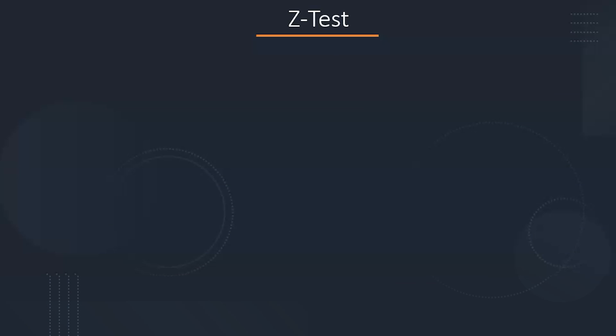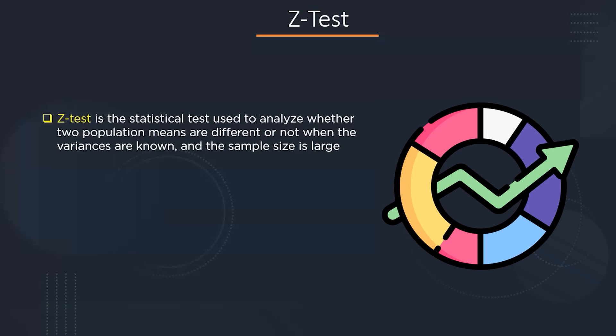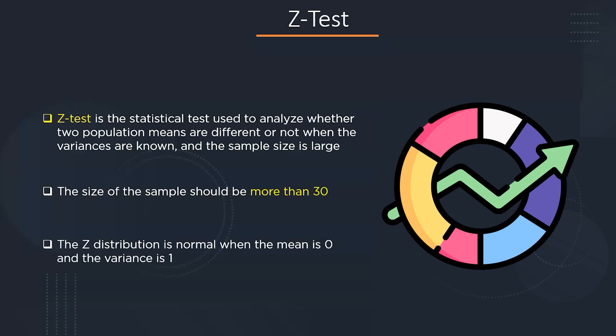Now that we know about the null and research hypothesis, let's move on to Z-test. A Z-test is a statistically significant test for hypothesis testing. It is used to analyze whether two population means are different when the variances are known and the sample size is very large — usually more than 30. When the Z-distribution is normal, the mean is 0 and the variance is 1.